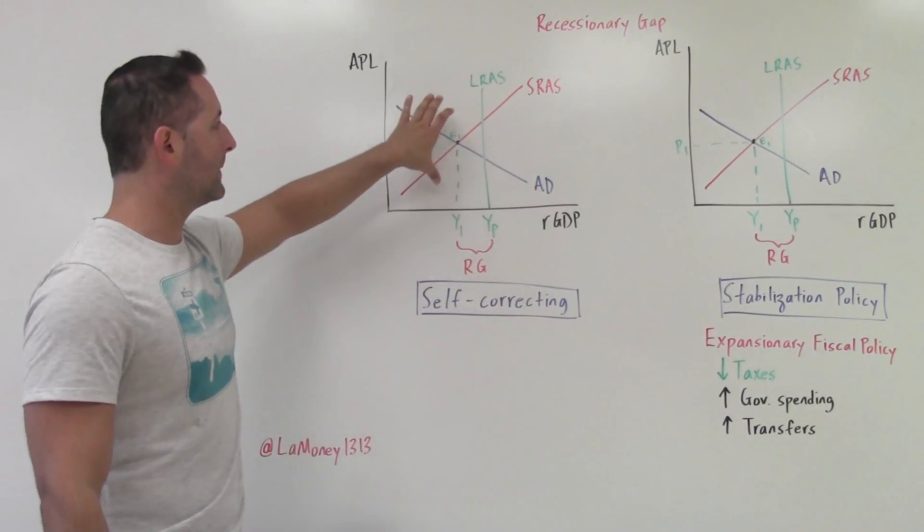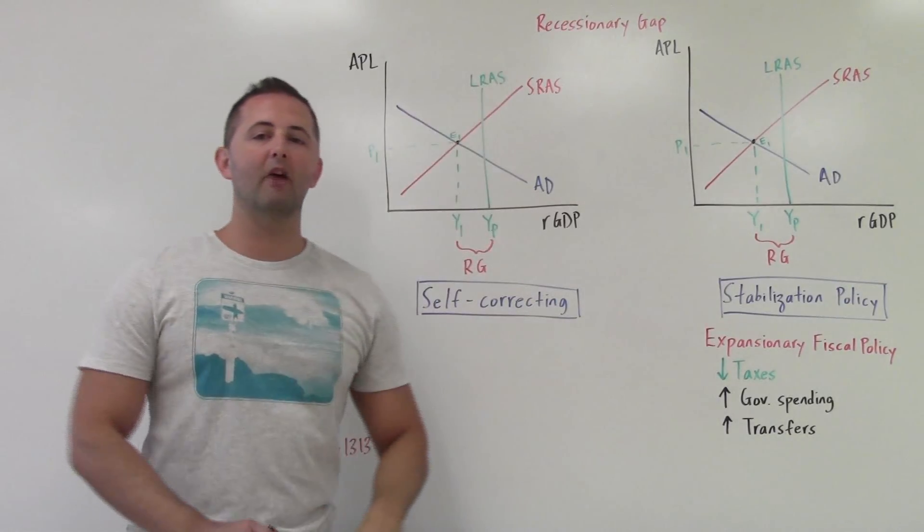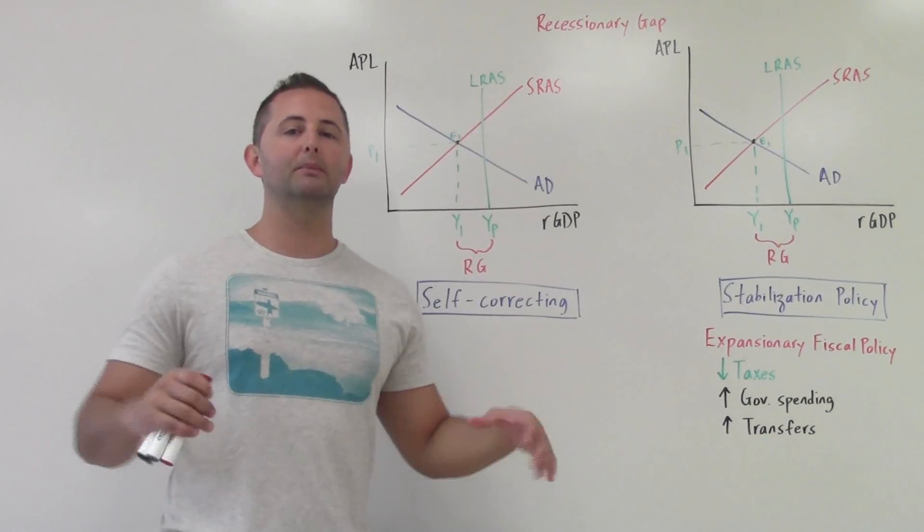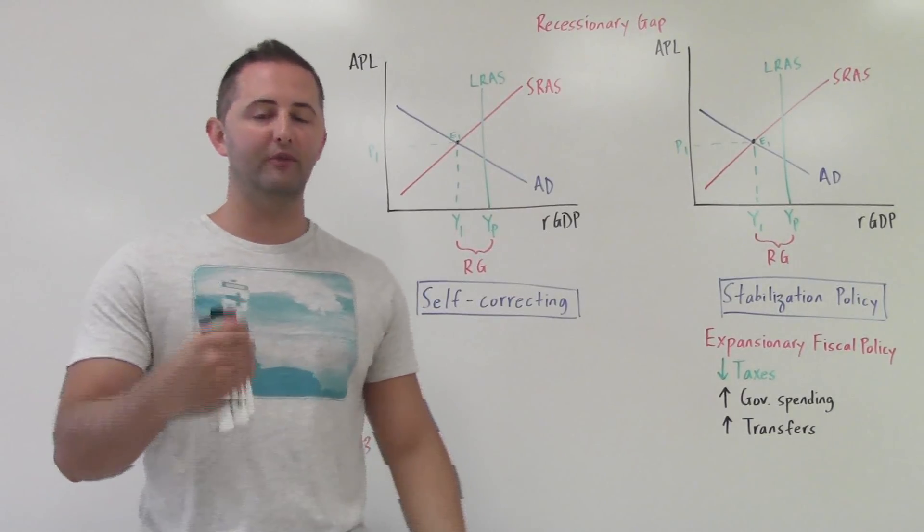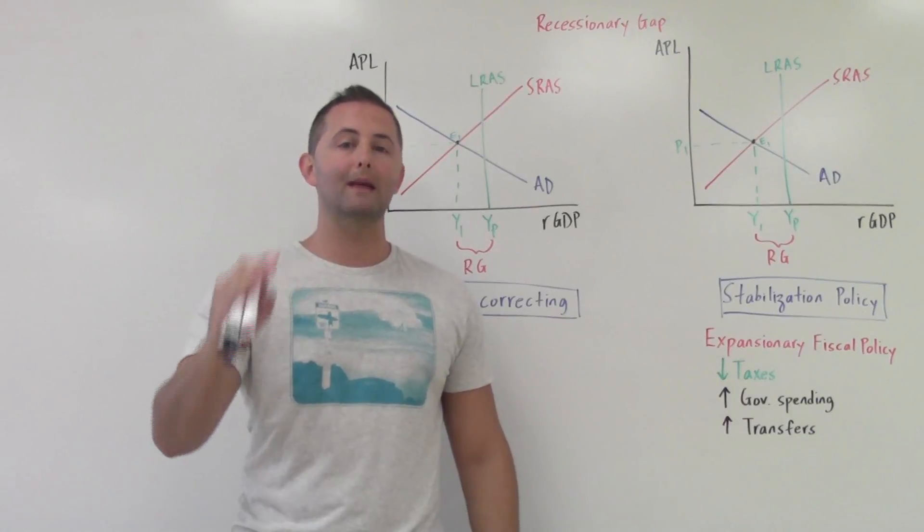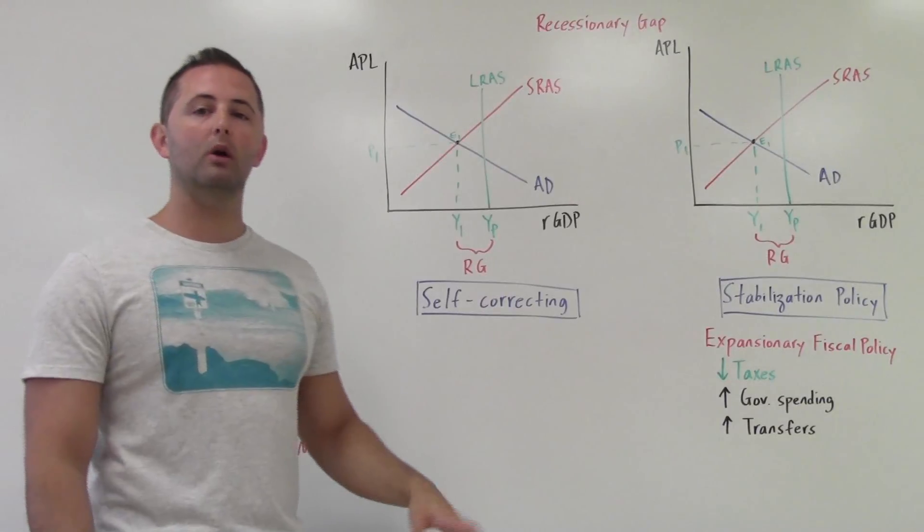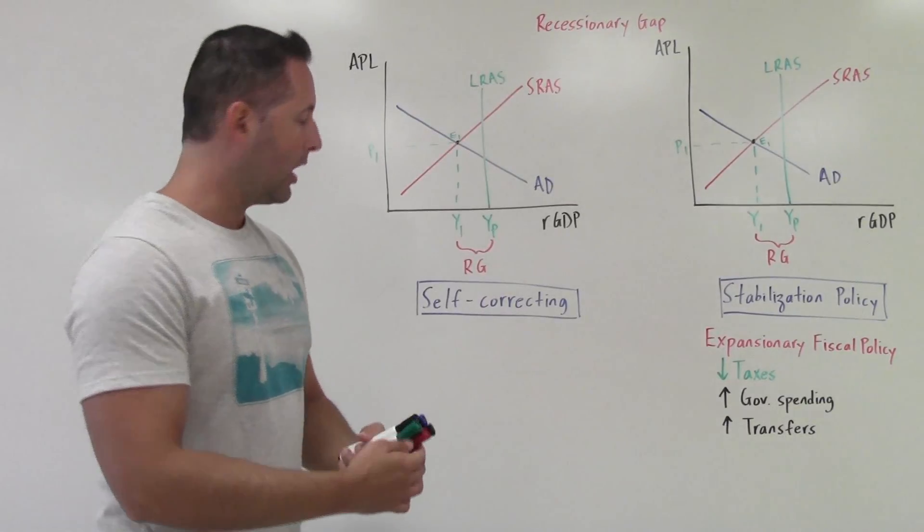The assumption from this point forward on this model is that the government does nothing. They don't change anything about their policies. They simply allow the economy to naturally fix itself, and it will naturally fix itself. So how is that going to happen? How do we move from the short run to the long run?